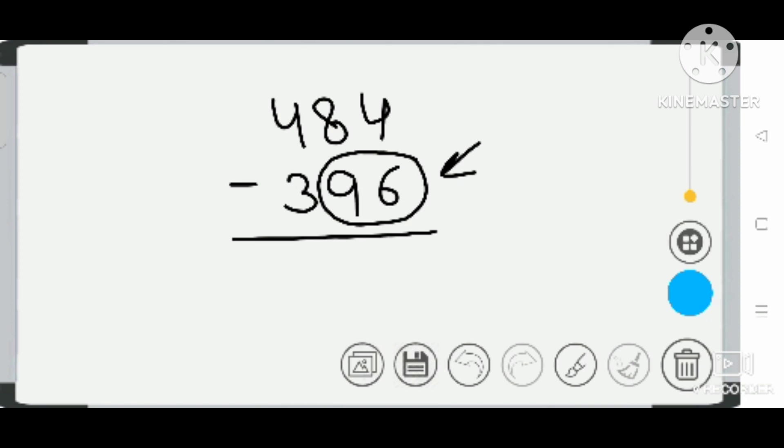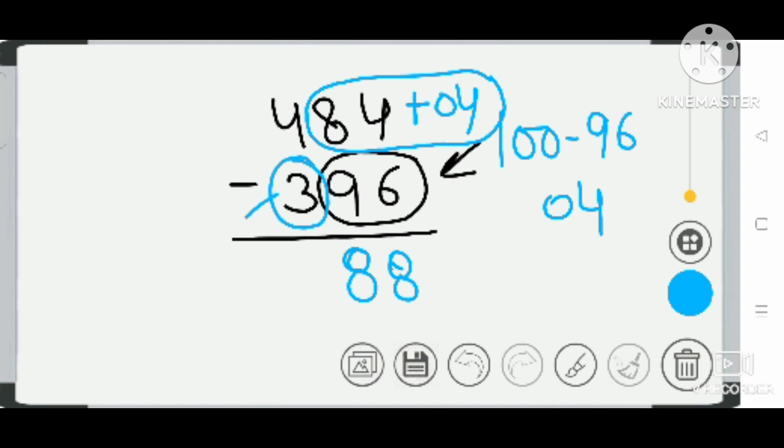The number is 96. First check the base of 96, which is 100. You subtract 96 from 100 - your answer is 04. Write 04 here and add to 84: 84 plus 4 is 88. Now see this number, which is 3. Take successor of 3, which is 4. 4 minus 4 is 0. Your answer is 88.